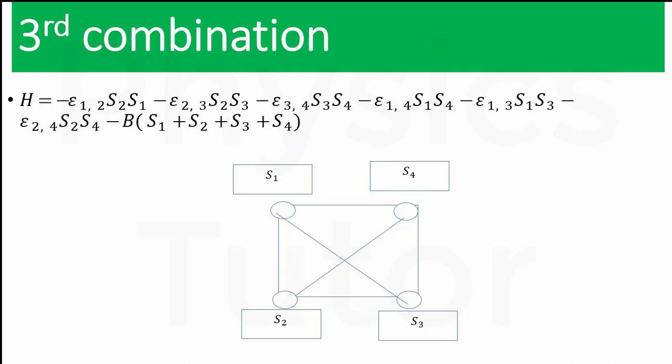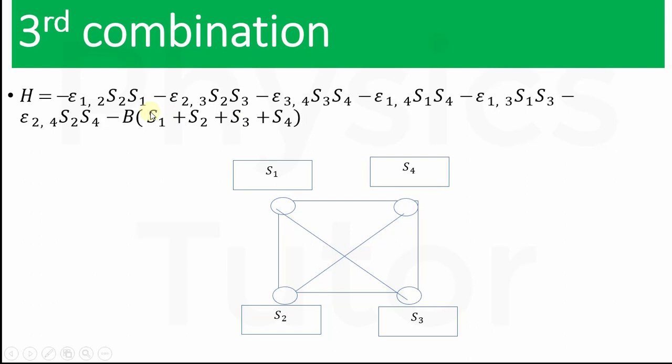For detailed spin value calculation, we use these equations for the first, second, third, and fourth combinations. We put the values: if the first particle has spin +1, we put +1; if it has a negative value, we put the negative value. In the same manner, putting in all the spin values, we can get the final answer.